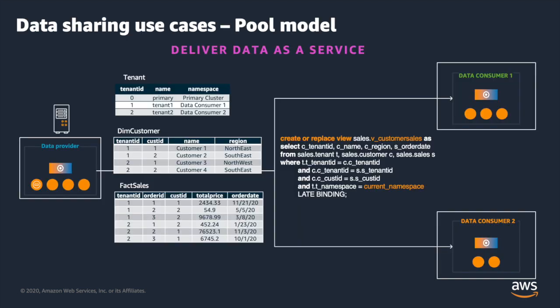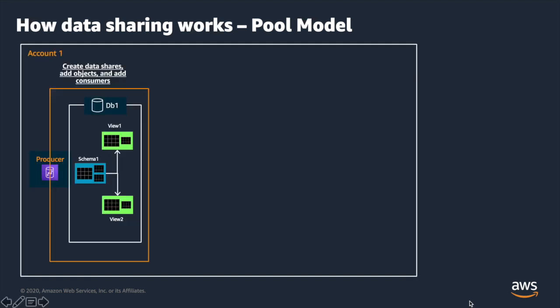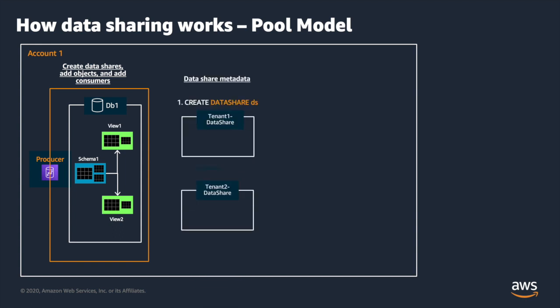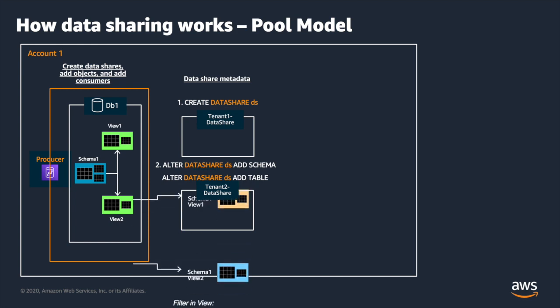First, let us look at how you can implement a pool model. This requires an additional column called tenant ID in each table, which is used to control access to individual tenant data. The current_namespace system variable will have the namespace of the consumer cluster from which queries are being triggered. We store this namespace and the corresponding tenant ID in the tenant table and reference this namespace in a view to restrict access to relevant data for consumers. Data can be shared in three simple steps: first, create a data share — a new metadata object. Then, add the objects — schemas, tables, or views — to this data share.